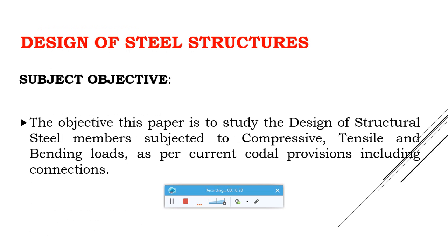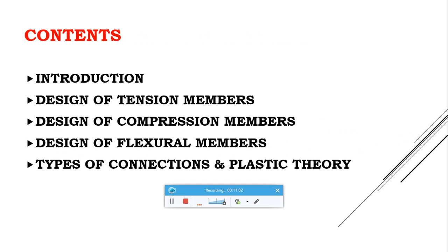The next subject is Design of Steel Structures, one of the most important subjects for civil engineering. The objective is to study the design of structural steel members subjected to various forces like compressive, tensile, and bending loads, as per current codal provisions including connections. All steel elements should be connected by means of some type of connection, and these things will be covered in this subject.